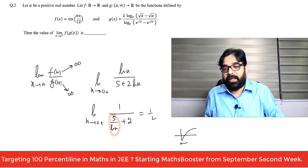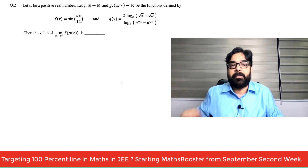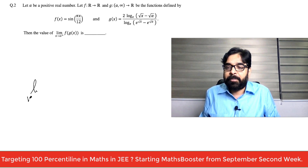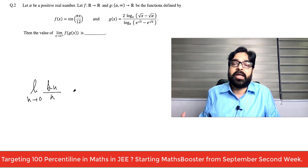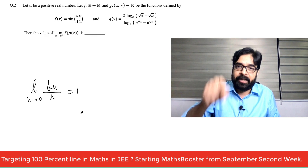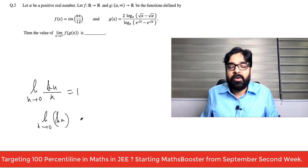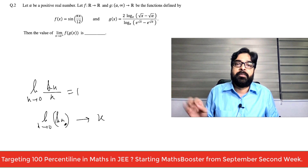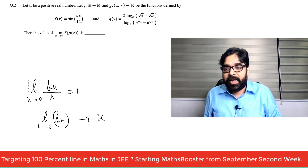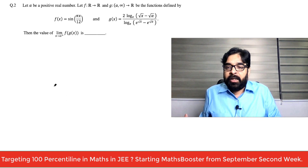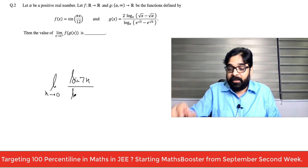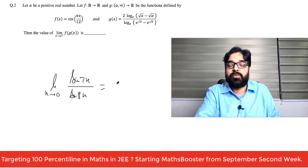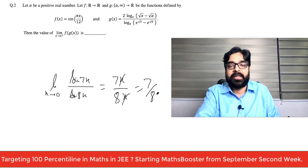Second logic: limit x→0 of sin x / x equals 1. Learn it this way — as x approaches zero, sin x can be replaced by x. For example, limit x→0 of sin(7x) / sin(8x): sin(7x) behaves like 7x, sin(8x) behaves like 8x, the x cancels, and the answer is 7 by 8.